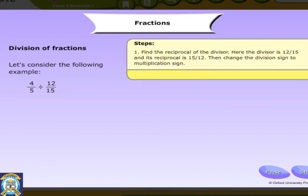Division of fractions. Let's consider the following example. Step 1. Find the reciprocal of the divisor. Here the divisor is 12 by 15, and its reciprocal is 15 divided by 12. Then change the division sign to multiplication sign. Step 2. Then cancel the common factors. So the answer is 1.